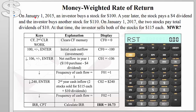On January 1st, 2015, an investor buys a stock for $100. A year later, on January 1st, 2016, the stock pays a $4 dividend and the investor buys another stock for $110. On January 1st, 2017, the two stocks pay total dividends of $10, and the investor sells both stocks for $115 each. The question is: what is the money-weighted rate of return?